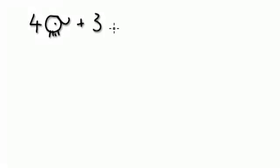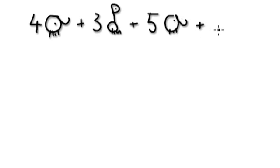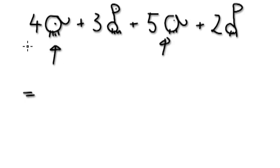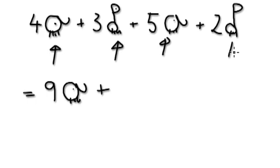In the previous video, we said that if two things are of the same type, we can merge them. For example, if we have four elephants plus three giraffes plus five elephants plus two giraffes — because you've got elephants here and elephants here, rather than listing them separately, just say nine elephants. And here you've got giraffes, so you can merge them: three giraffes plus two giraffes would be five giraffes.